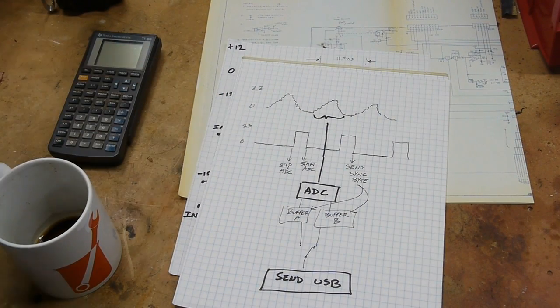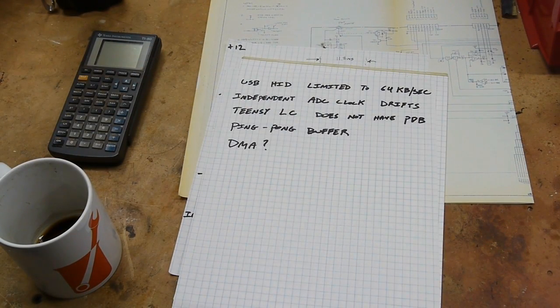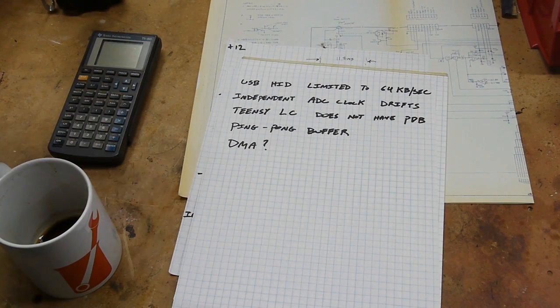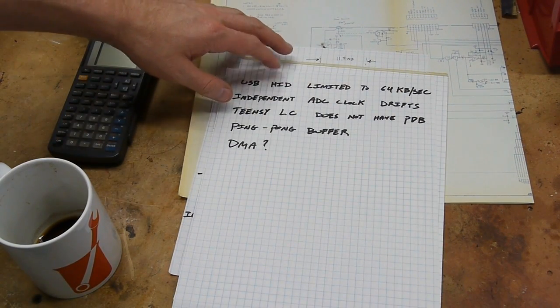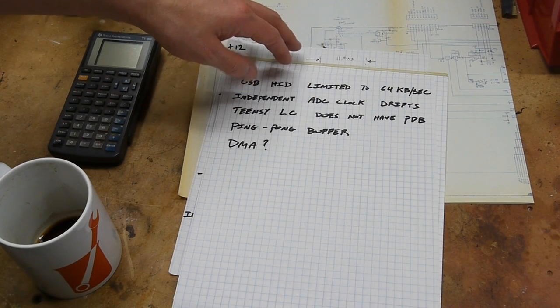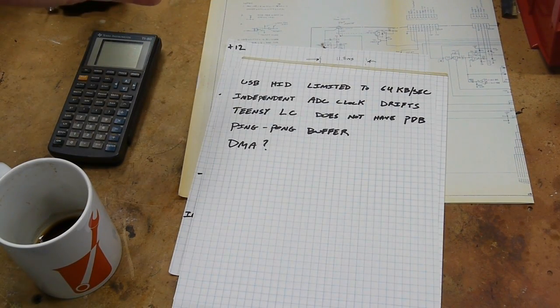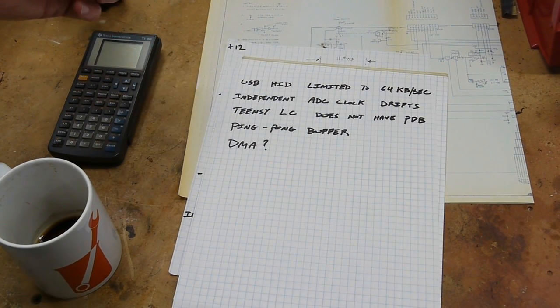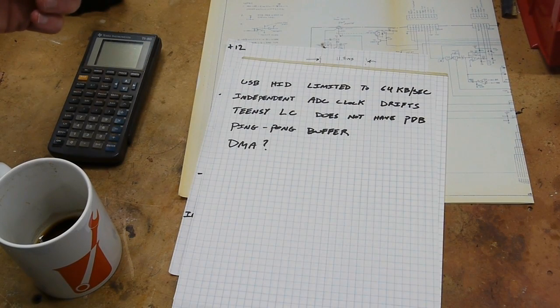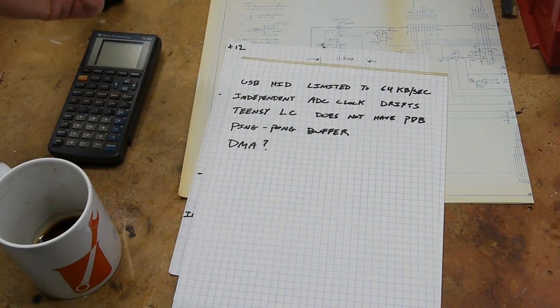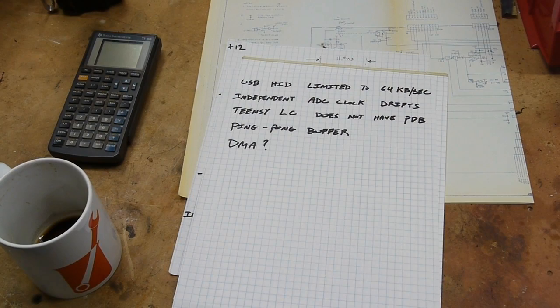Here's a couple other things to keep in mind if you're doing a similar project. USB HID is limited to about 64 kilobytes per second. Now it is guaranteed bandwidth—a thousand times a second you can send a 64 byte packet.